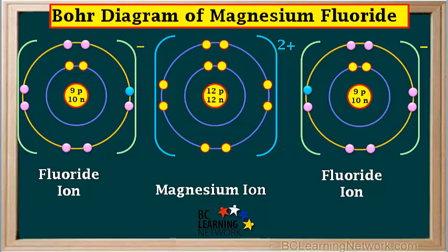Notice that the magnesium ion and both fluoride ions have the same electron arrangement as the neutral atom of the noble gas neon — each with two electrons in the first shell and eight electrons, or a stable octet, in the second shell. Note that the colors we add to electrons here are just to help us keep track; color has no meaning when we are talking about actual electrons.